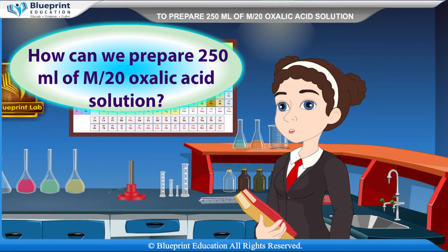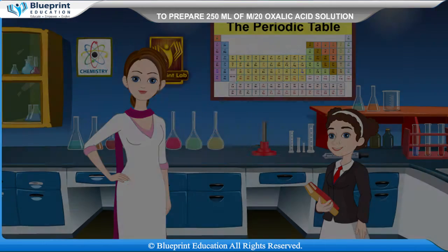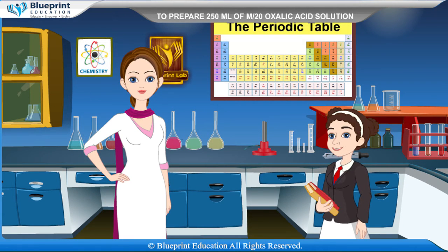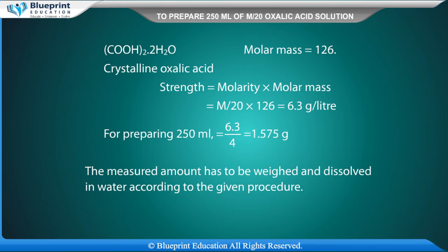How can we prepare 250 ml of M/20 oxalic acid solution? Using the following formula, we can prepare it. The formula is (COOH)₂·2H₂O. Molar mass is equal to 126 g/mol for crystalline oxalic acid. Strength equals molarity × molar mass = M/20 × 126 = 6.3 gram per liter. For preparing 250 ml: 6.3 ÷ 4 = 1.575 grams.